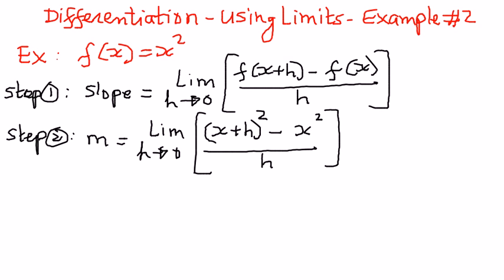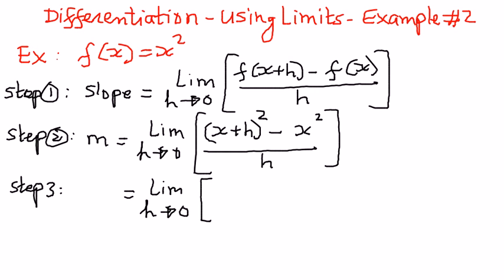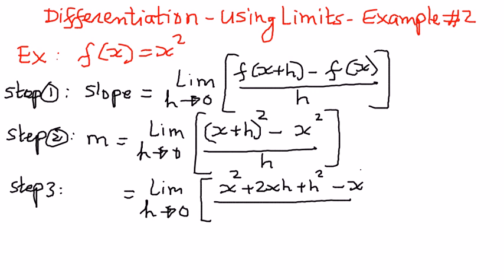Now, in the next step, we're going to simplify the math — step number three. We're going to write this out as limit as h approaches 0. We expand x plus h, the whole squared, which gives us x to the power of 2, plus 2 times xh, plus h to the power of 2, minus x squared, the whole thing divided by h.